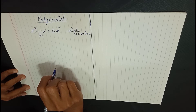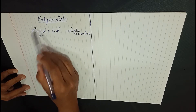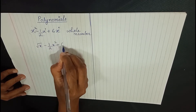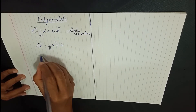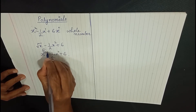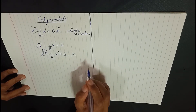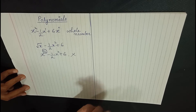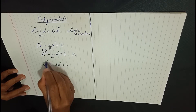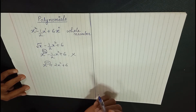Which expressions cannot be called polynomials? When we have a rational number in the form m/n as the index, or a negative number. For example, root x minus half x squared plus 6 — here root x written in index form has power one-half, a rational number, so this cannot be a polynomial. Similarly, x raised to minus one plus two x squared plus 6 has a negative power, so such algebraic expressions are also not polynomials.